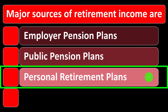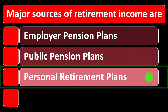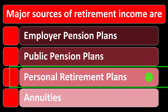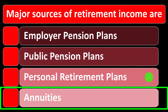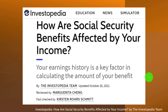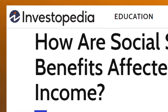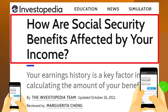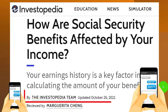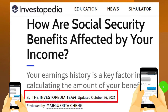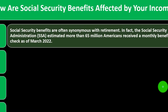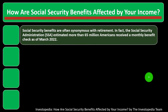We're also covering personal retirement plans like IRAs, other savings plans specific for retirement, and annuities as a tool for retirement planning. Most of this information comes from Investopedia: 'How Are Social Security Benefits Affected by Your Income,' updated October 26, 2021.